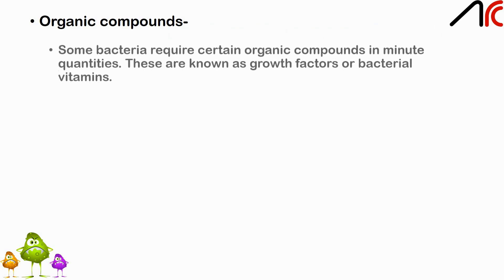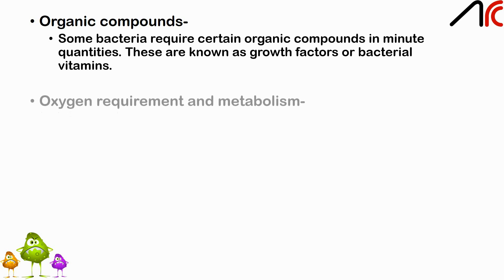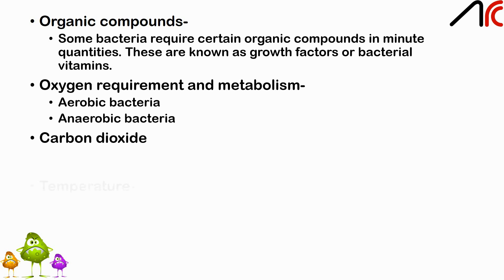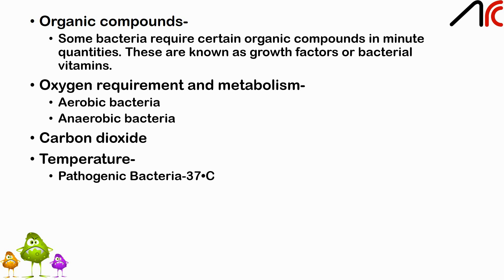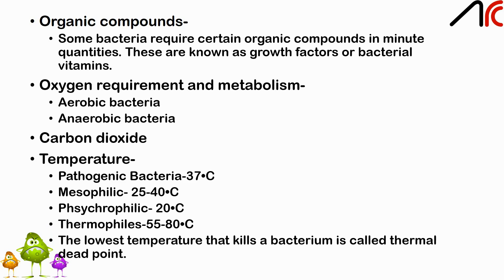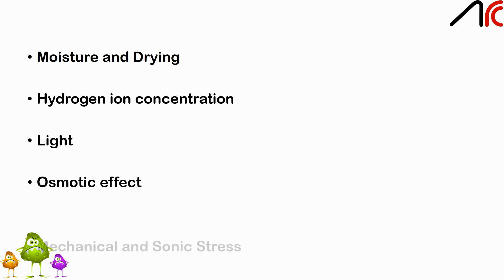Some bacteria require certain organic compounds in minute quantities, known as growth factors and bacterial vitamins. Regarding oxygen requirement, there are aerobic bacteria and anaerobic bacteria. Carbon dioxide is also a factor. Temperature: the temperature at which growth occurs best is the optimum temperature — 37°C for pathogenic bacteria, 25–40°C for mesophiles, 20°C for psychrophiles, and 55–80°C for thermophiles. Extremely thermophilic bacteria can grow at temperatures as high as 250°C. The lowest temperature that kills a bacterium under standard conditions in a given time is the thermal death point. Other factors affecting growth include moisture and drying, hydrogen ion concentration, light, osmotic effects, and mechanical and sonic vibrations.